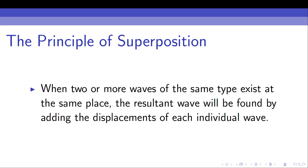So it's fairly straightforward. If we've got two waves and they're in the same place at the same time and they're the same type of wave, then they will undergo superposition — they will interfere with each other. And rather than seeing the two individual waves, what we see is the two waves added up. We add the individual displacements of all the waves.